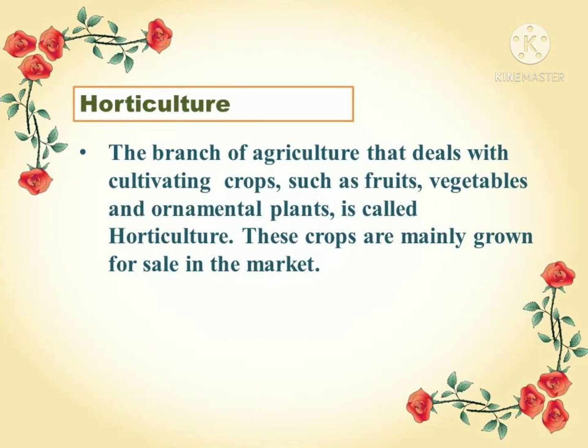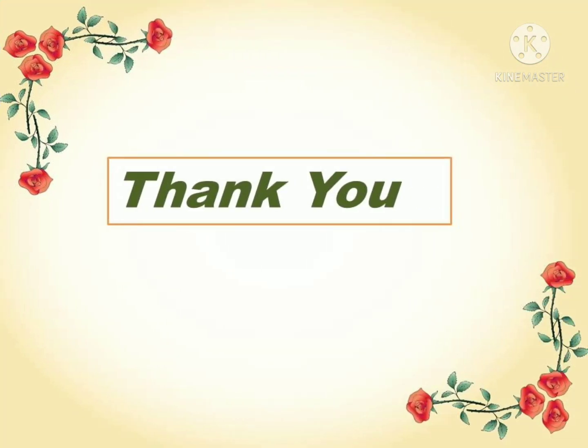Our last topic for today is horticulture. It is the branch of agriculture that deals with cultivating crops such as vegetables, fruits, and ornamental plants. Ornamental plants are plants which are grown for decorative purposes only. These crops are primarily grown for sale in the market. That's all for today — thank you and have a nice day.